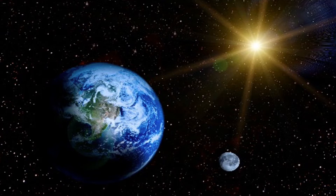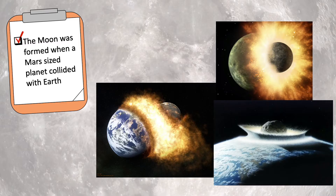The moon does not shine with its own light — it simply reflects light coming from the sun. The moon was formed 4.51 billion years ago when a Mars-sized planet collided with earth and blasted out rocks that all came together and orbited around the earth.